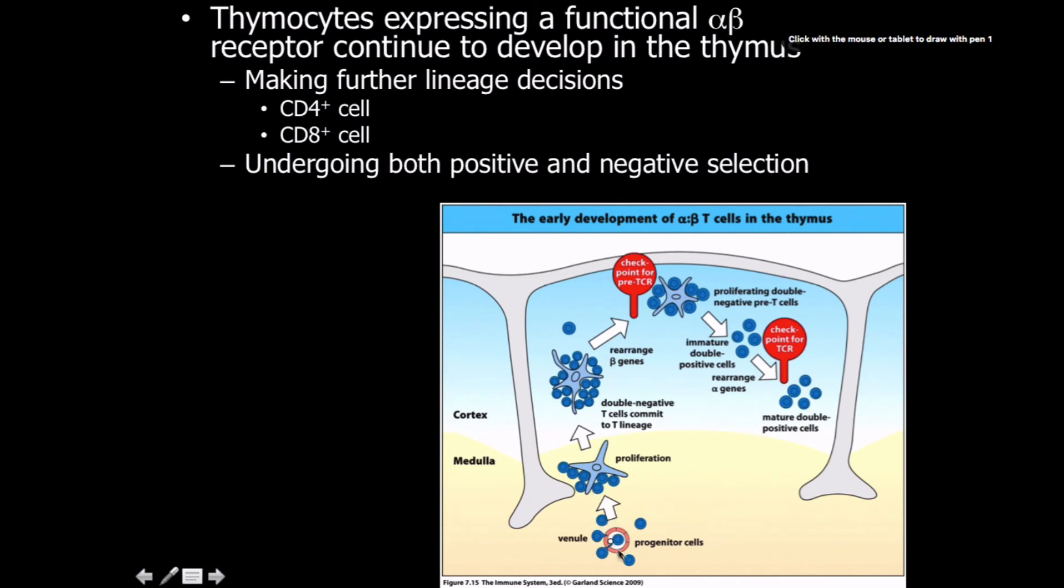Here we see the development of alpha-beta T cells in the thymus. Progenitor cells enter through the venules and interact with the epithelia as they start undergoing lots of proliferation through the stromal cells. They're double negative T cells that commit to a lineage. Then they have the first race between beta and delta-gamma. We assume beta wins because it does for the most part. We have a checkpoint to make sure that beta chain is helpful and functional. We do this with a surrogate alpha chain. If it passes that test, it undergoes more proliferation and starts to produce an alpha chain. If that alpha chain is functional, we test if it can form a bond with the beta chain. If functional, it develops further into mature double positive cells, which undergo the next step. Selection is going to happen.